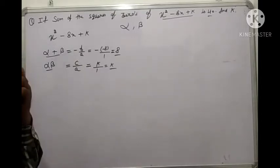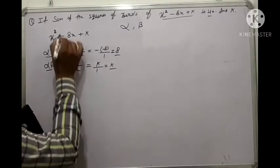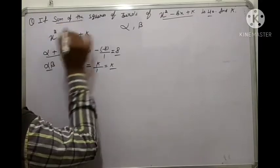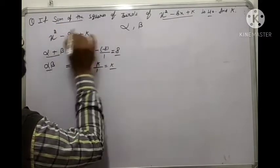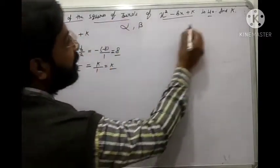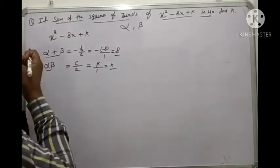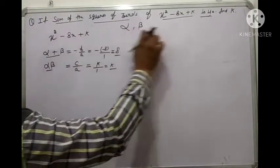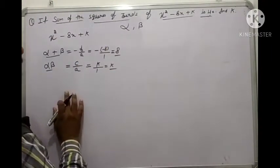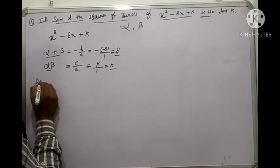Now we are given the condition: the sum of squares of zeros is 40. So we write alpha squared plus beta squared equals 40.